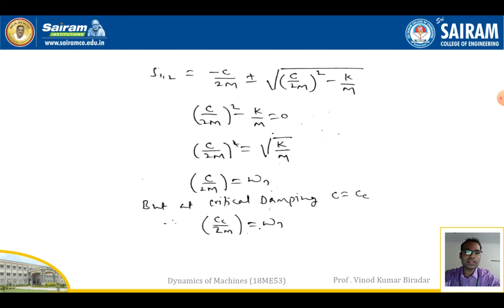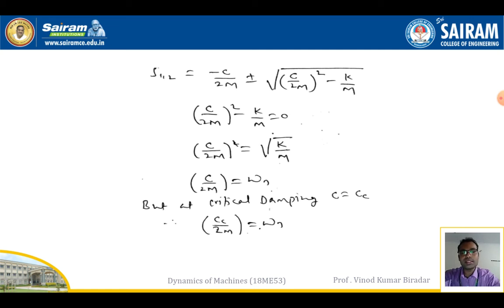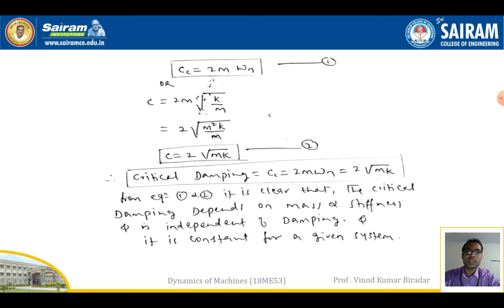Taking the square root of both sides: c/2m = √(k/m). We know that √(k/m) = ωn. Therefore c/2m = ωn. At critical damping, c = Cc, so substituting: Cc/2m = ωn, and therefore Cc = 2m·ωn — this is equation number one.